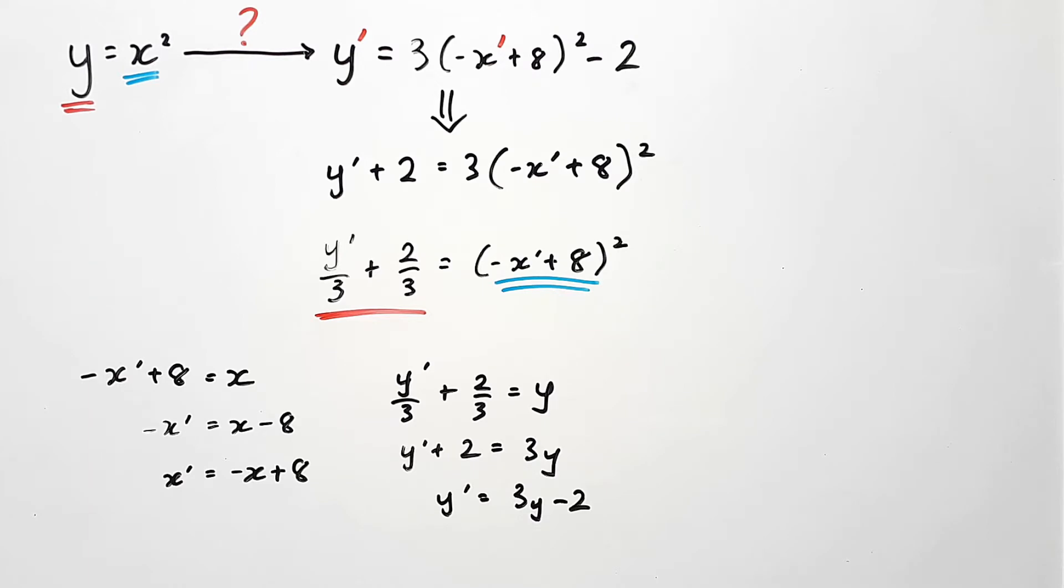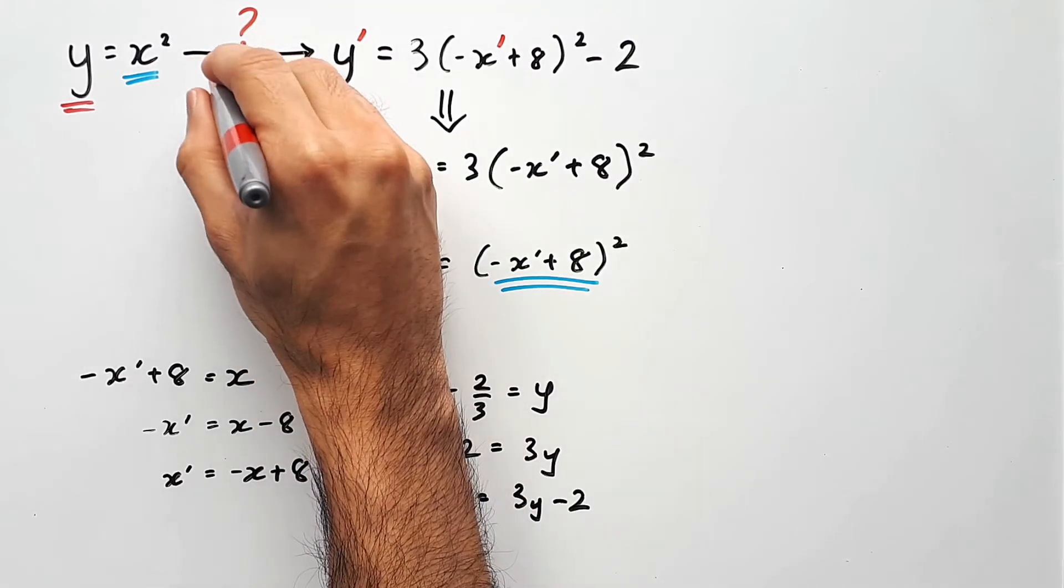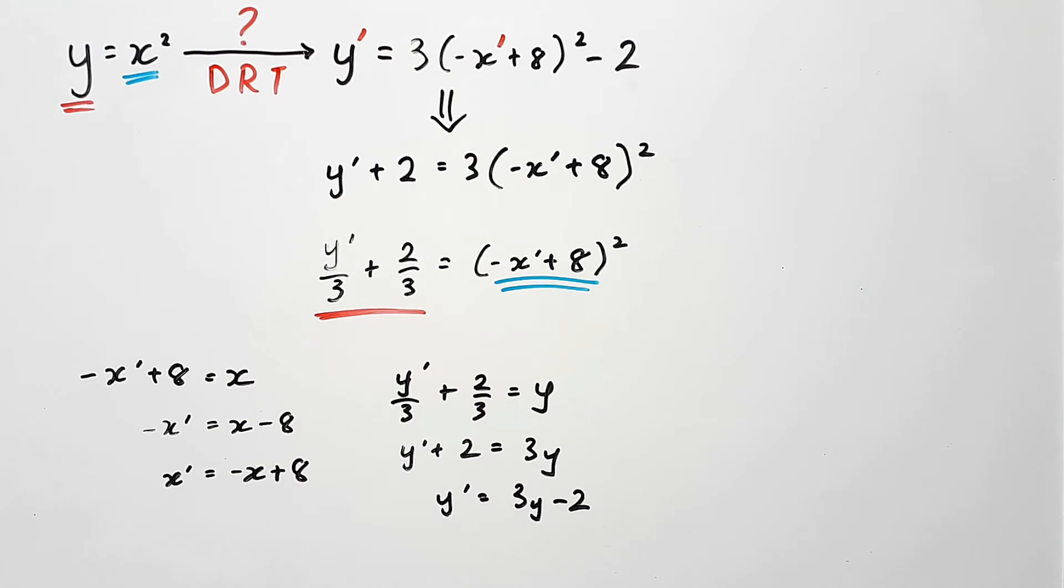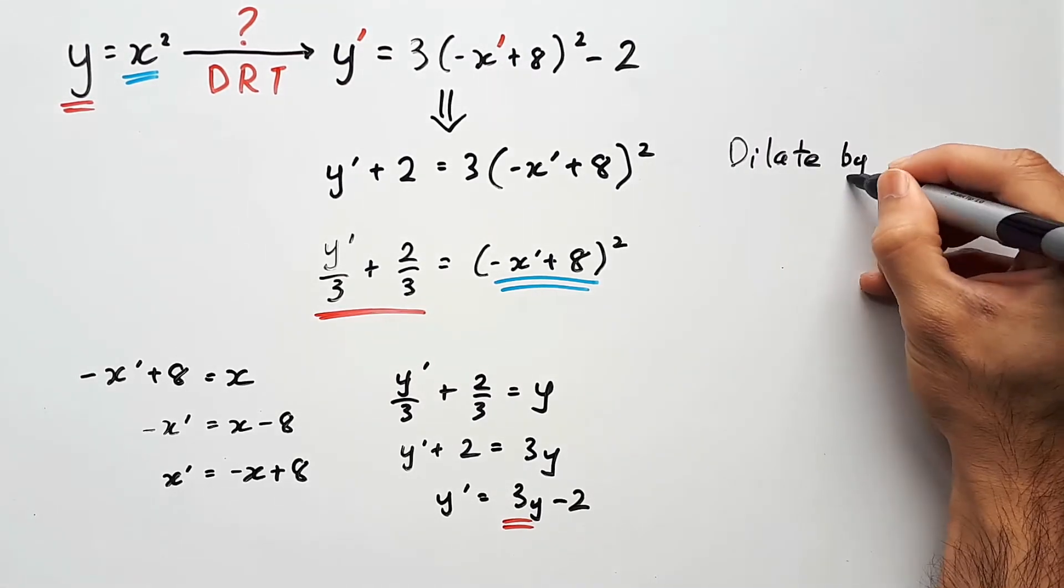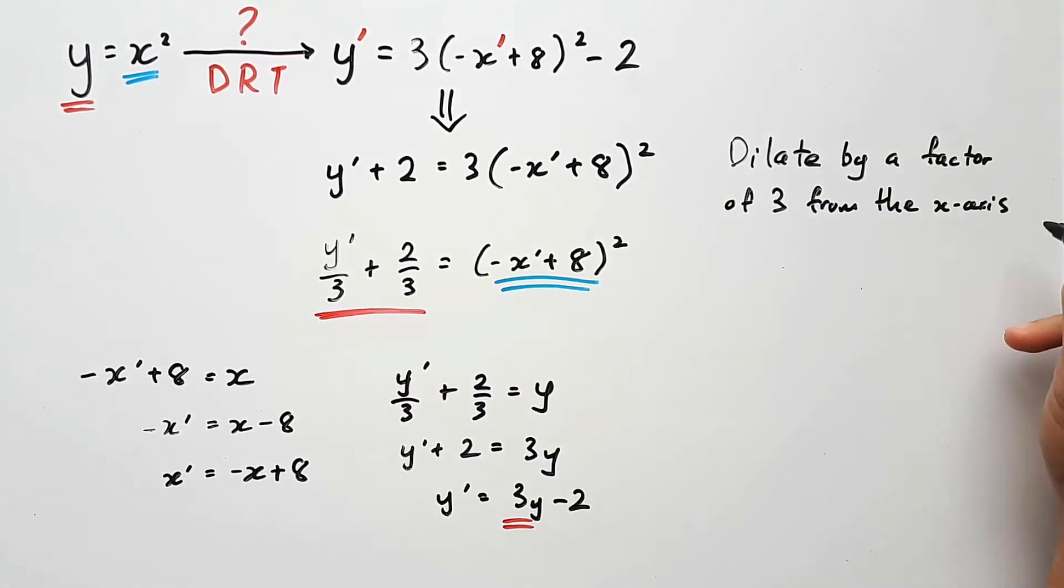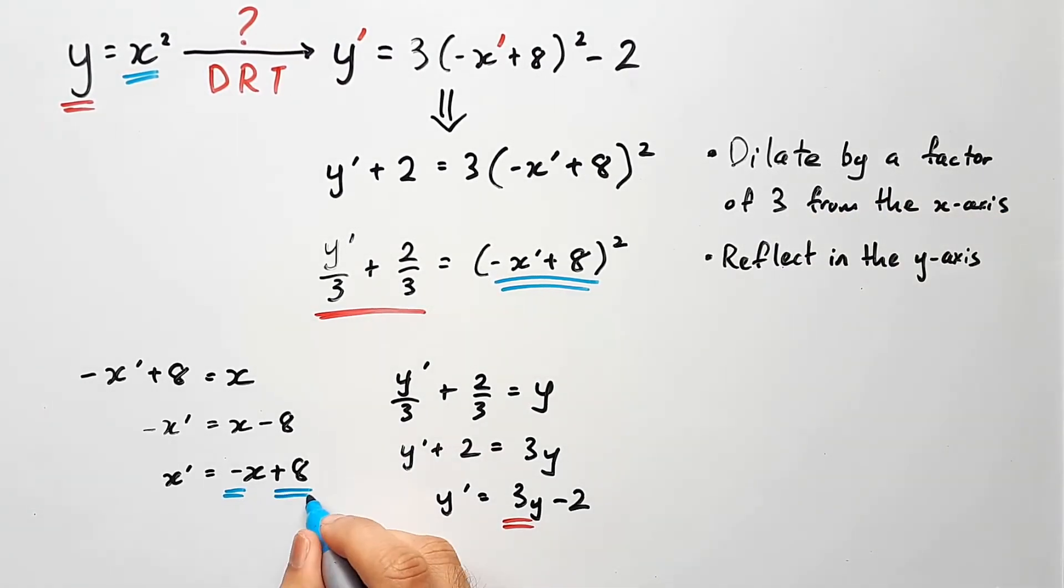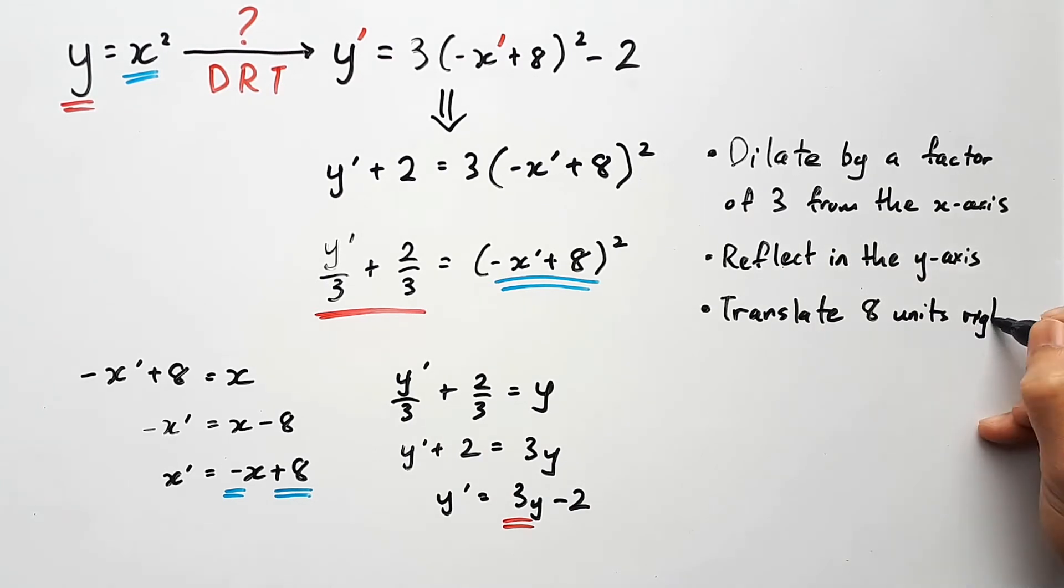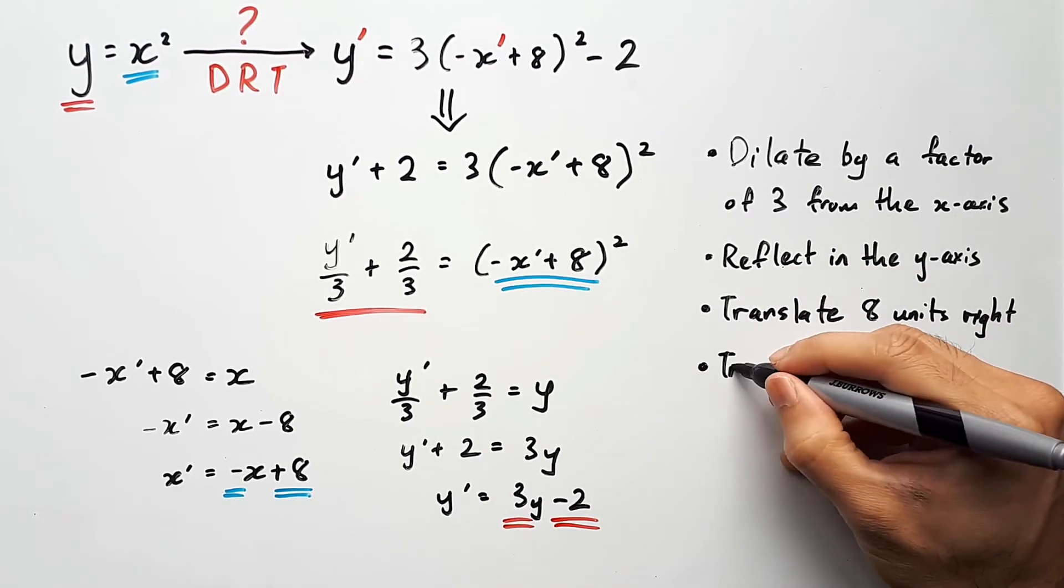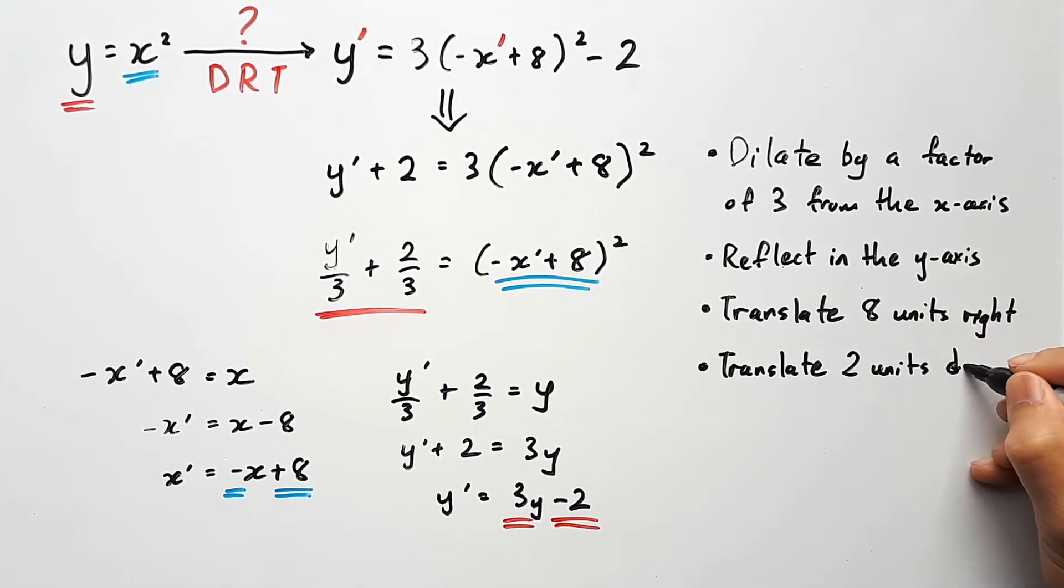Now we need to write down the transformations in a very specific order, DRT. And I'm not sure why this is the case. My best guess is it's a standard convention to make it easier for examiners to compare answers. So the first thing you want to do is pick out all the dilations. There's only one, which is 3 times y, and so we dilate by a factor of 3 from the x-axis. There is a negative on the x, and so we reflect in the y-axis. Plus 8 means translate 8 units to the right. And minus 2 for the y-value means translate 2 units down.